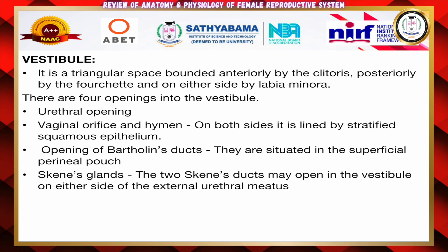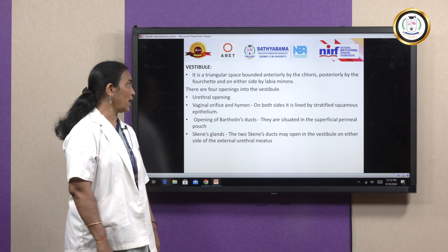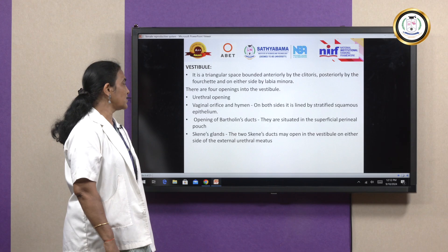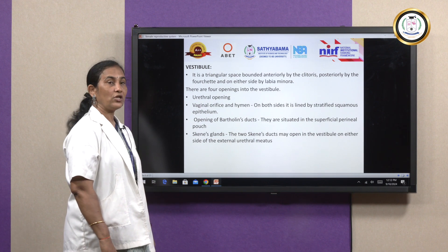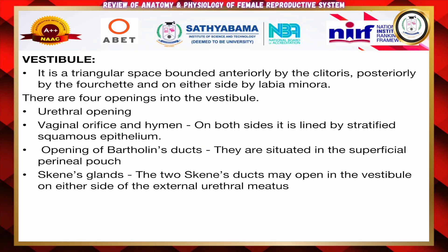The vestibule is a triangular space bounded anteriorly by the clitoris, posteriorly by the fourchette, and on either side by the labia minora. There are four openings in the vestibule: the urethral opening, the vaginal orifice or hymen, the opening of the Bartholin glands — which are situated superficially in the perineal pouch — and Skene's glands, with two Skene's ducts opening in the vestibule on either side of the external urethral meatus.